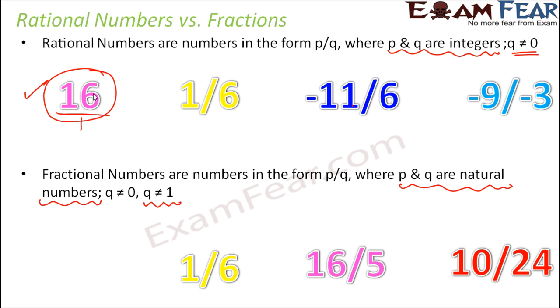The only thing is that the denominator should not be equal to 0, the denominator should not be equal to 1, and both p and q should be natural numbers. So this is the basic difference between a rational number and a fraction.